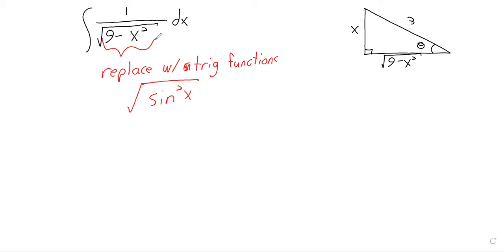It's not going to end up being this — this is just an example. But if we could replace what's under the square root with a sine squared, then the square root would go away, and we'd maybe have something we could deal with. Because trig functions are difficult to work with, but square roots are also difficult to work with. The hope is that by getting rid of the square root, we'll be able to proceed.